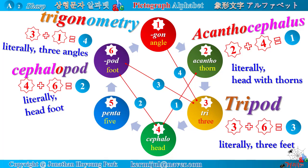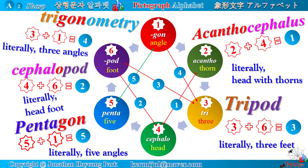Star number five — Latin root penta, meaning five. Star number five and star number one make the word pentagon, which literally means 'five angles.' Pentagon means a plane figure with five straight sides and five angles. It also refers to the pentagonal building serving as the headquarters of the U.S. Department of Defense, near Washington, D.C. Part of the building was badly damaged in the terrorist attacks of September 11, 2001. A pentagon has five angles, and a triangle has three angles.